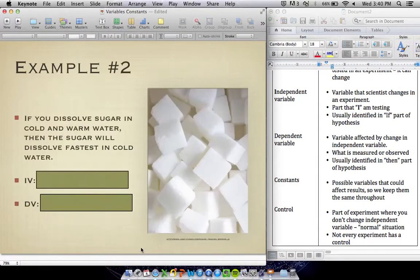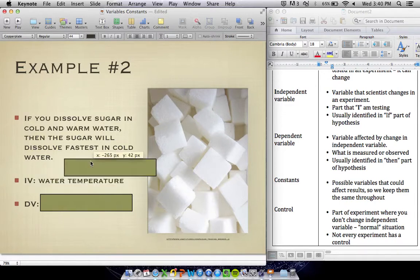Let's look at one more example. If you dissolve sugar in cold and warm water, then the sugar will dissolve fastest in cold water. For my independent variable, I'm going to look to the if part of my hypothesis and figure out what am I testing as a scientist. I'm putting sugar in cold and warm water. So what is different here that I have changed? I've changed the temperature of the water. That's what I have made different.